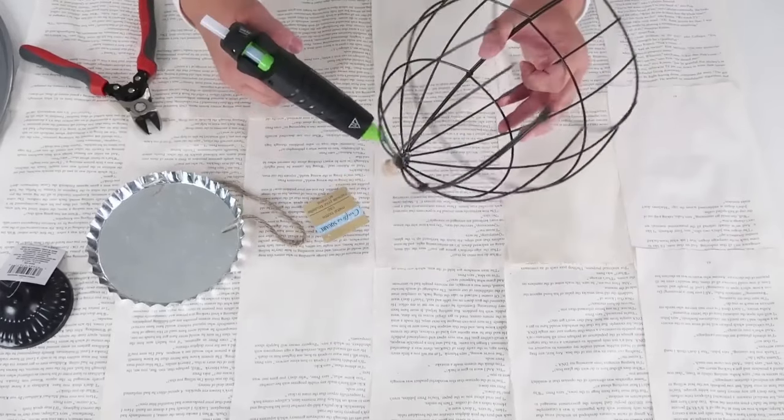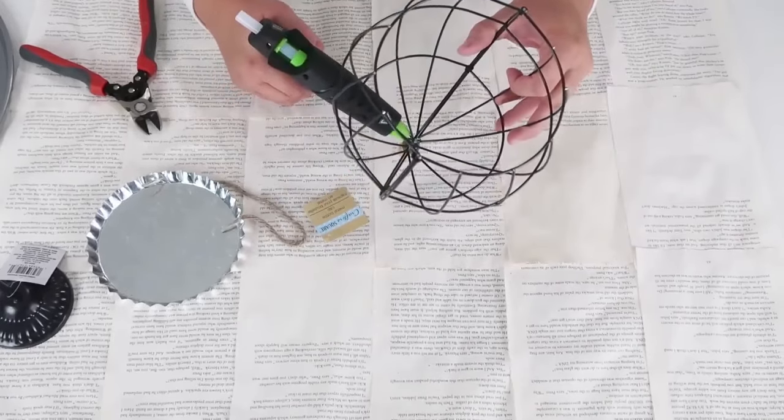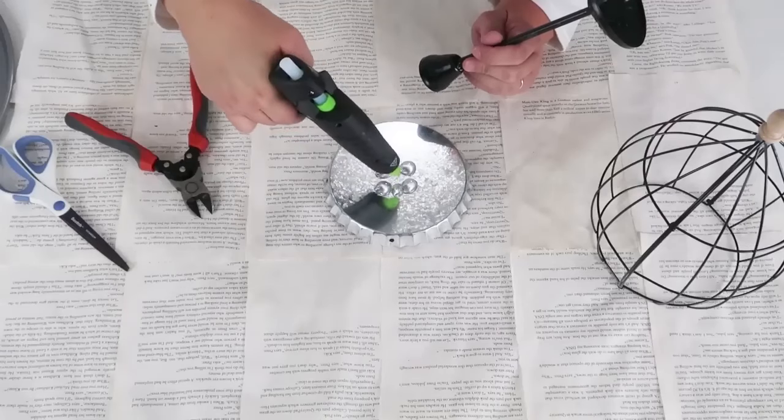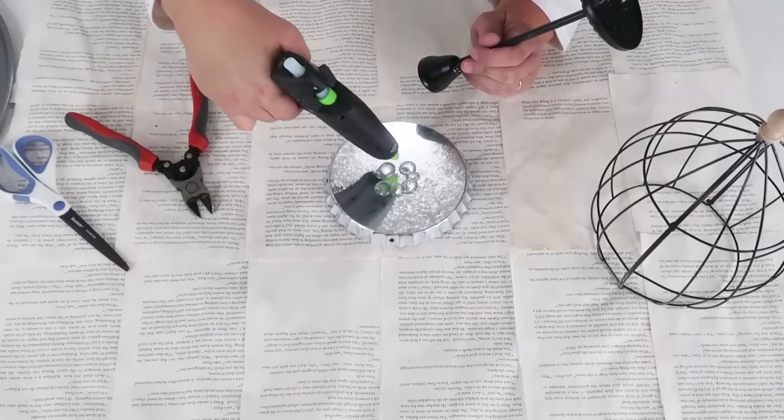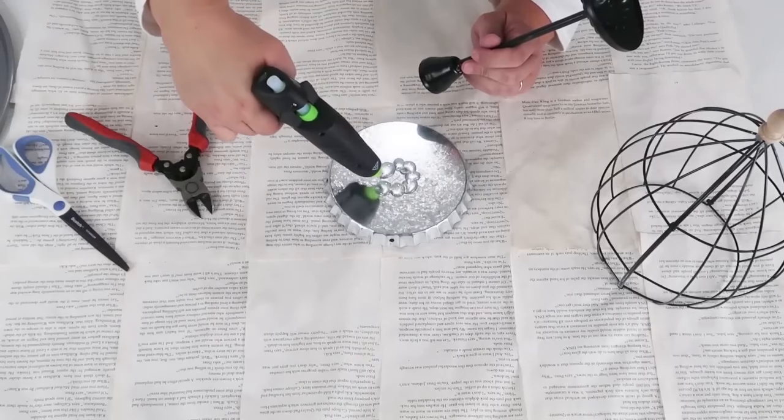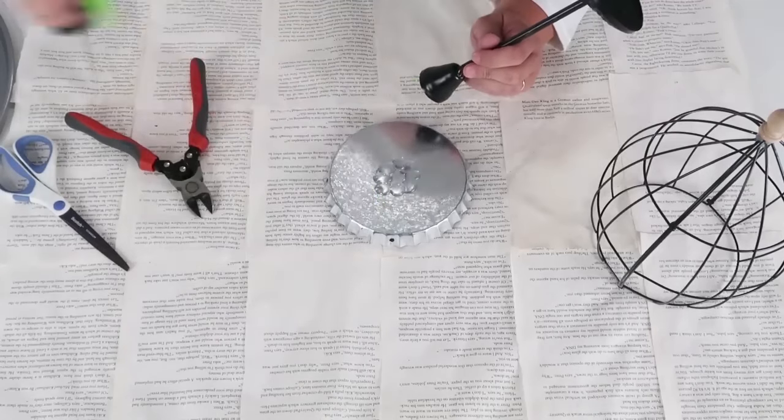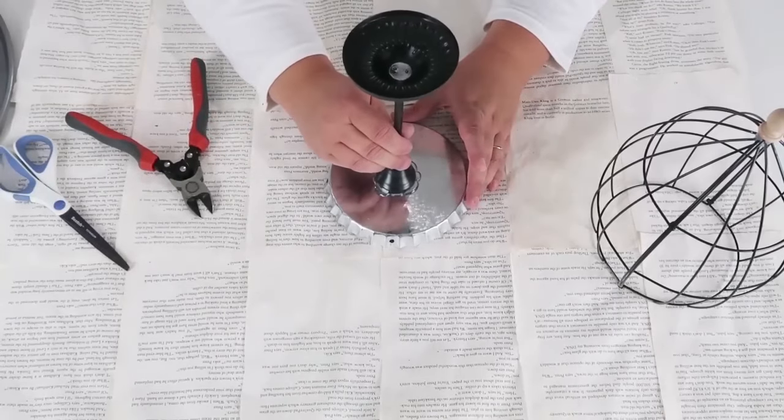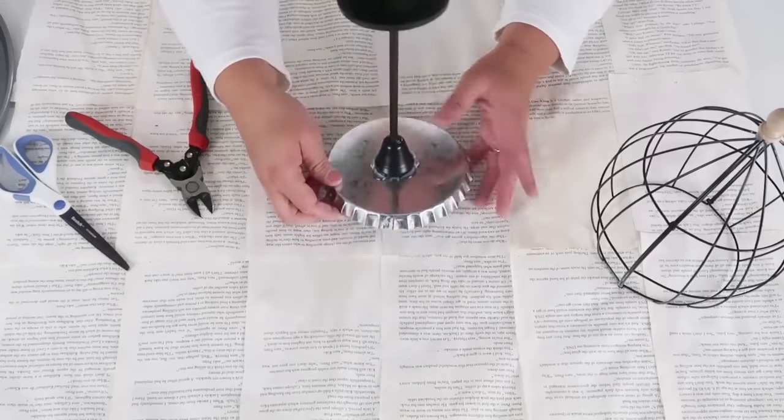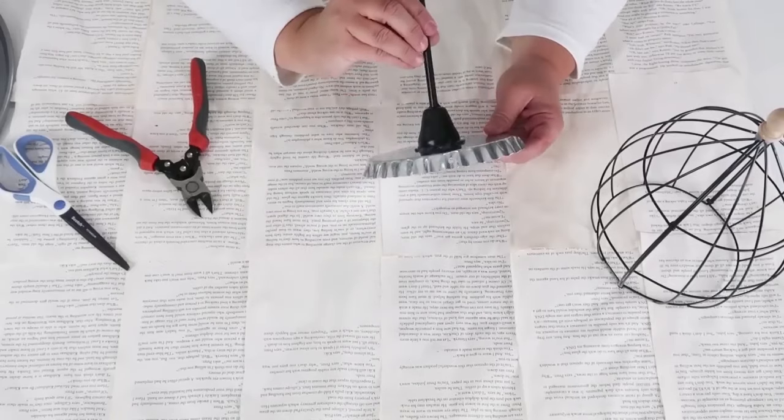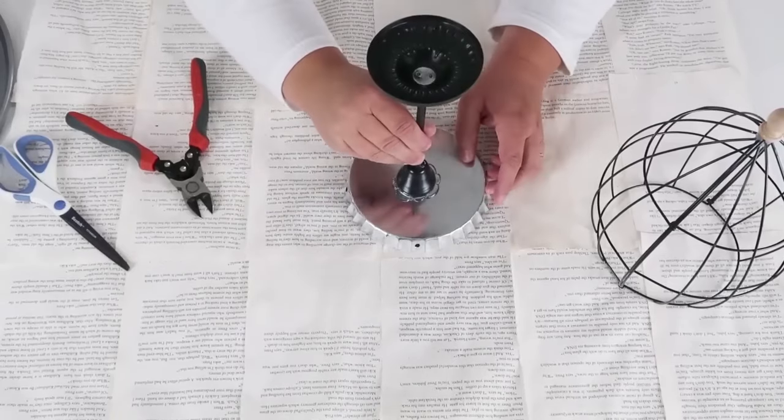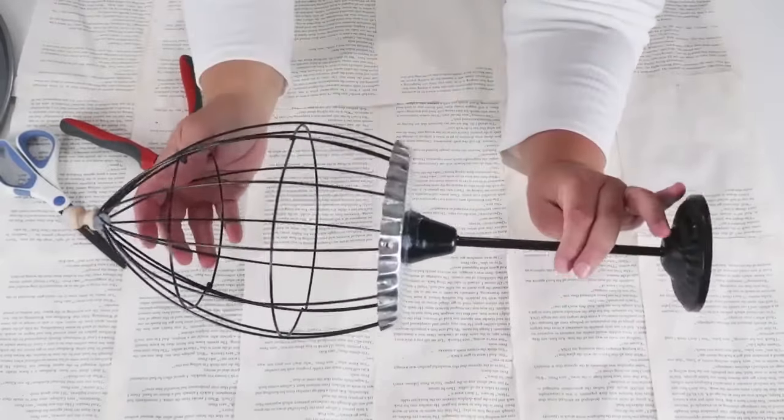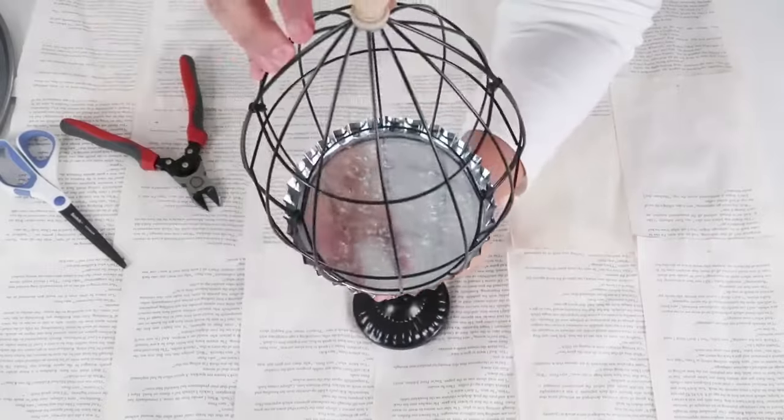Once that glue has completely dried, we're going to go ahead, put it to the side, and work on the base. Go ahead and take that galvanized tin. I'm using E6000 and hot glue for a short-term, long-term hold. Find the center point and go ahead and add on that candle stem to the bottom of that metal tray. Once that is glued nice and secure in place, I'm going to take it outside and I'm going to spray paint the whole thing white. But you can spray paint it whatever color you would like.